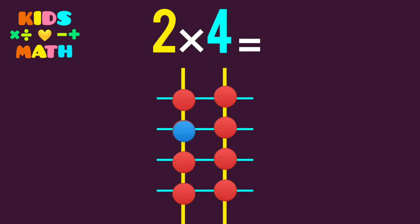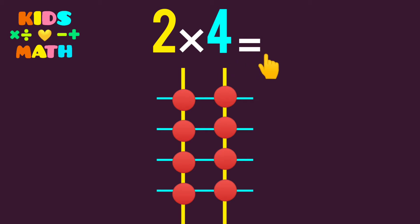We count: 1, 2, 3, 4, 5, 6, 7, 8. So 2 times 4 equals 8.